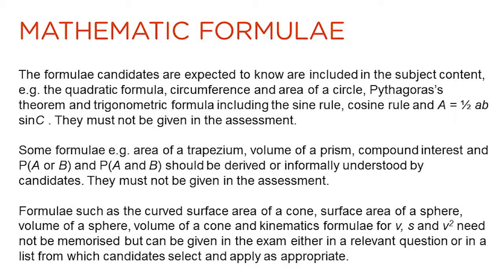The mathematical formulae that are given in the current GCSE will no longer be given at the beginning of each examination paper. Candidates are expected to know the following formulae: the quadratic equation formula, the circumference and area of a circle, Pythagoras' theorem, and the trigonometric formulae including the sine rule, the cosine rule, and the area of a triangle — these must not be given in the assessment. Some formulae, for example the area of a trapezium or the volume of a prism, should be derived or informally understood by candidates and also cannot be given in the assessment.